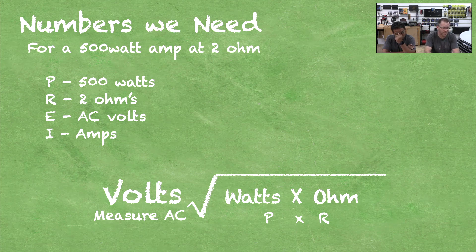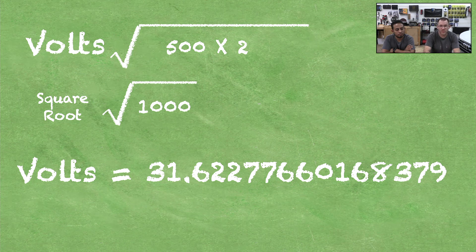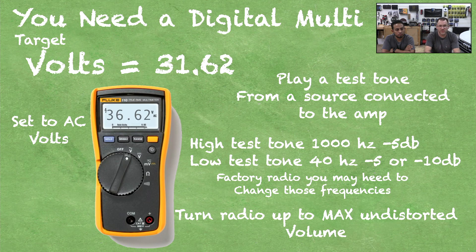The equation, measuring volts in AC: the square root of watts times ohms, or √(P × R). So: the square root of 500 times 2 equals the square root of 1000, which equals 31.62 volts. That's the number we're going to look for on our digital multimeter. This is a tool you are going to need — if you're doing anything in 12 volts and you don't have a digital multimeter, you need to stop and get one.